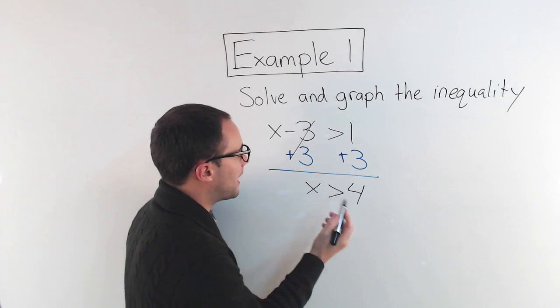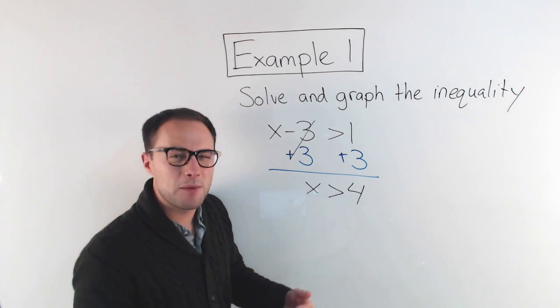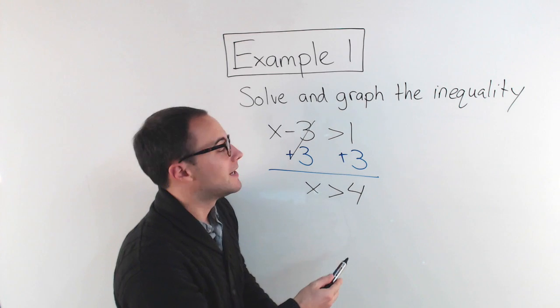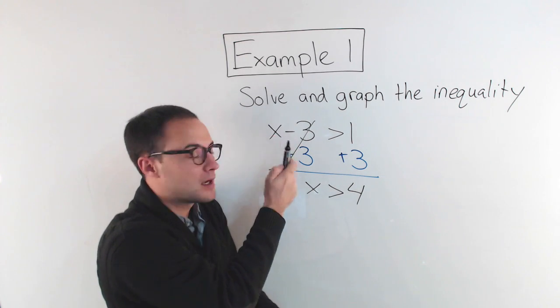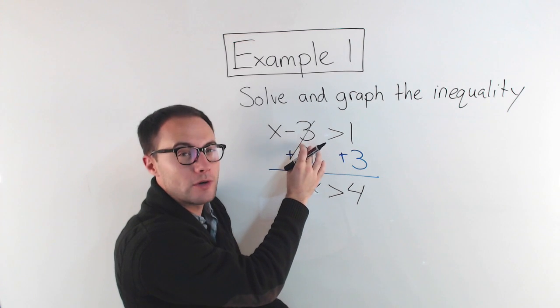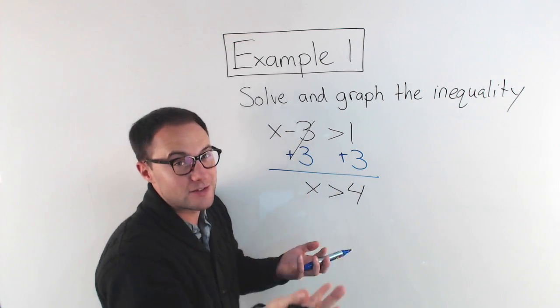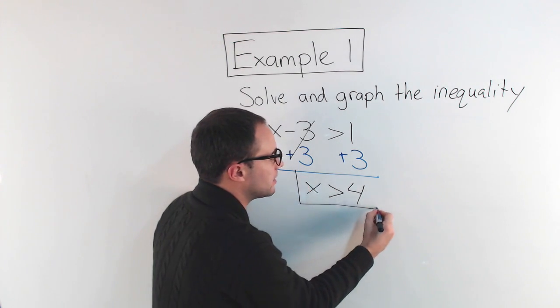That is my solution. Now if I wanted to check that, just pick a number that's greater than 4. Well, how about 5? 5 is greater than 4. So if I take that 5 and I substitute it back in, well 5 minus 3, is that greater than 1? Well yeah, 5 minus 3 is 2, which is greater than 1. So that works. So that is my solution.